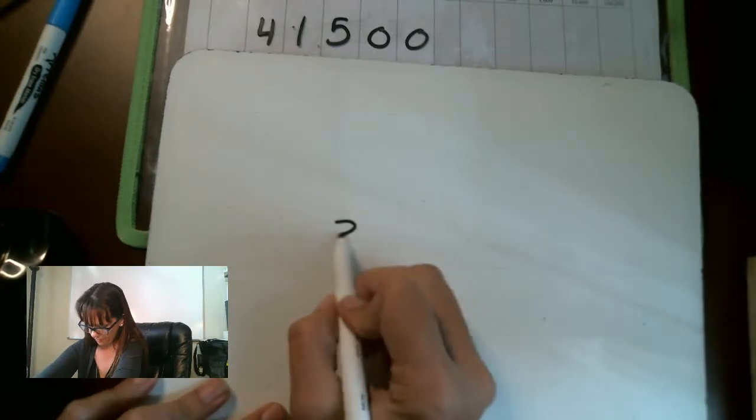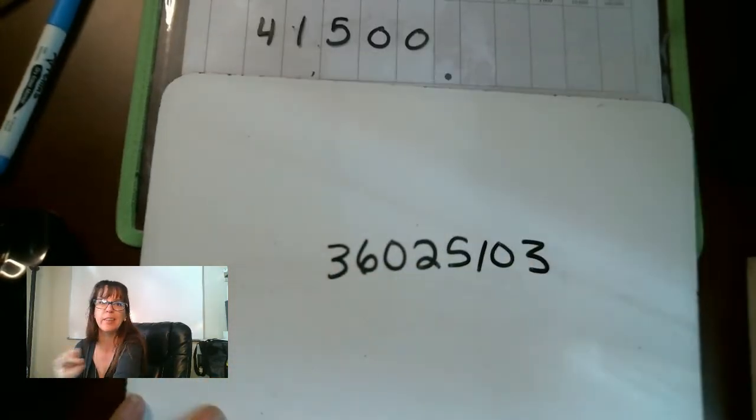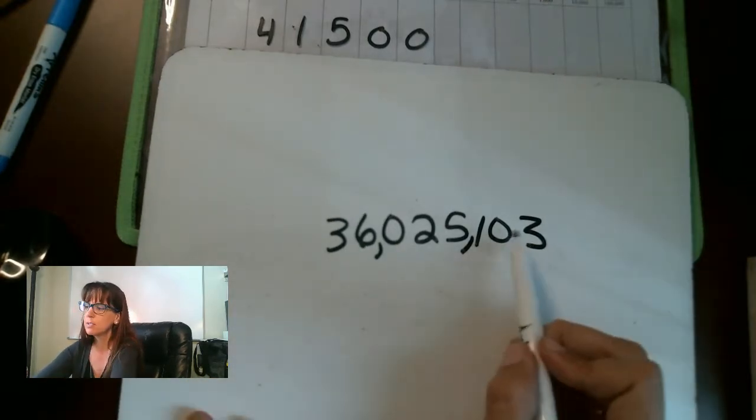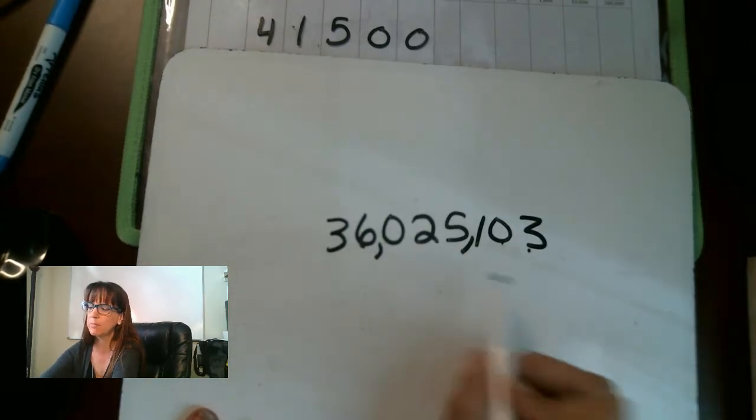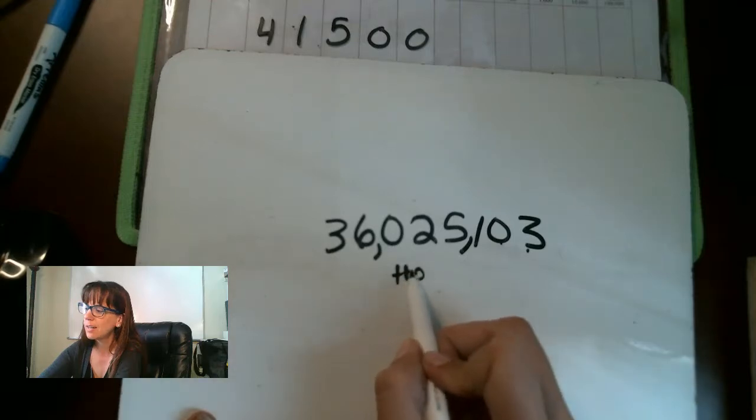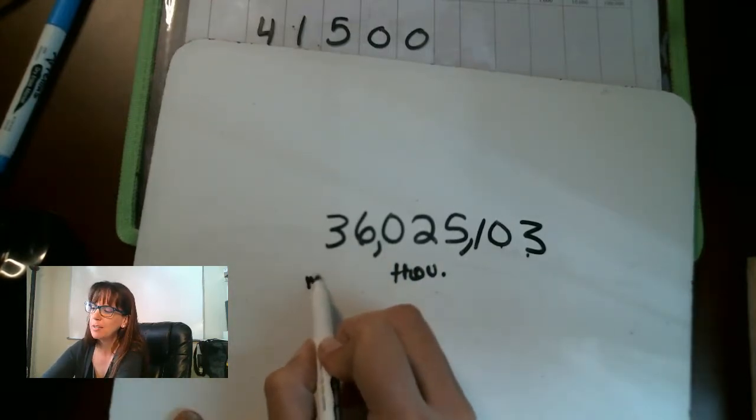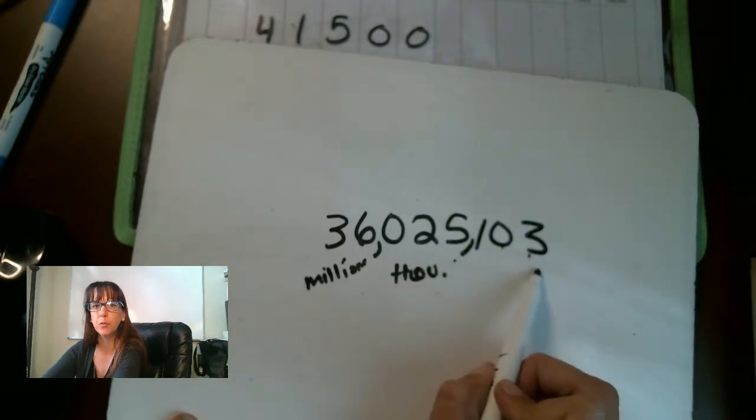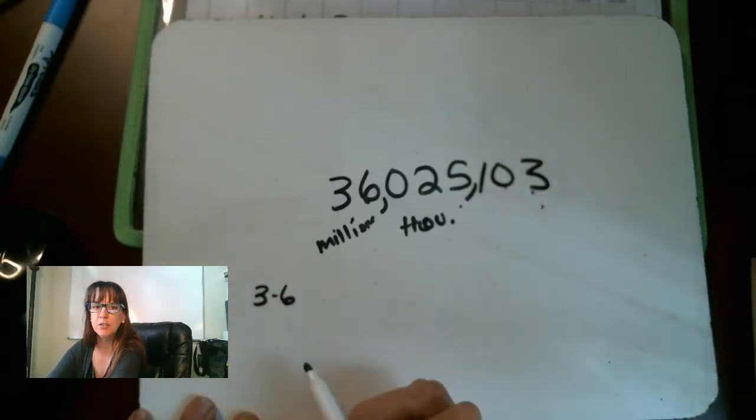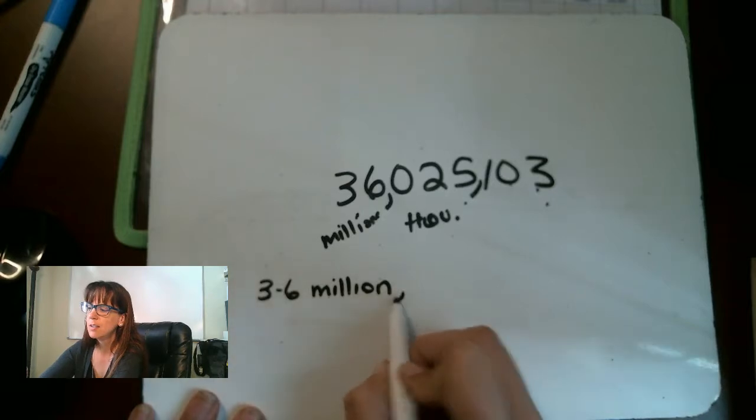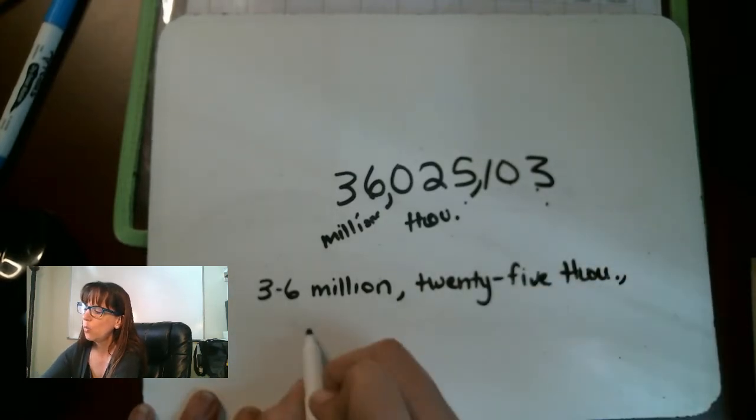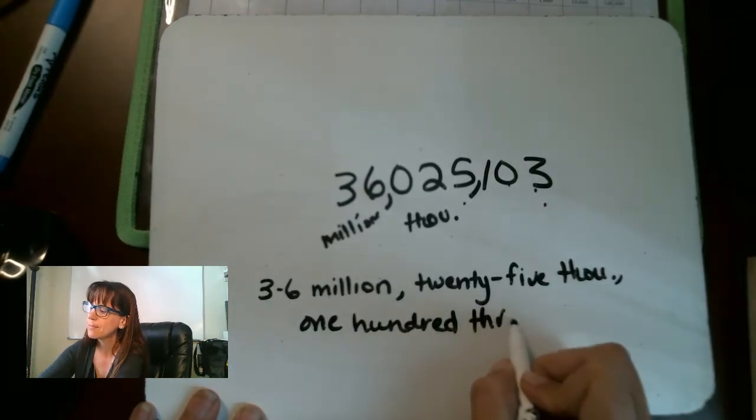Using words to write the next number. This is E. We have 3,602,5103. And this is where I think commas are helpful. We're going to go 3, comma, 1, 2, 3, comma. So we know that this is our hundreds, tens, ones. This is our thousands. And this is our millions. So we have 36,025,103. So 36, and I put a dash there because you should spell that out. I'm going to actually spell it out for you. Thirty-six million, twenty-five thousand, one hundred three. Excellent.